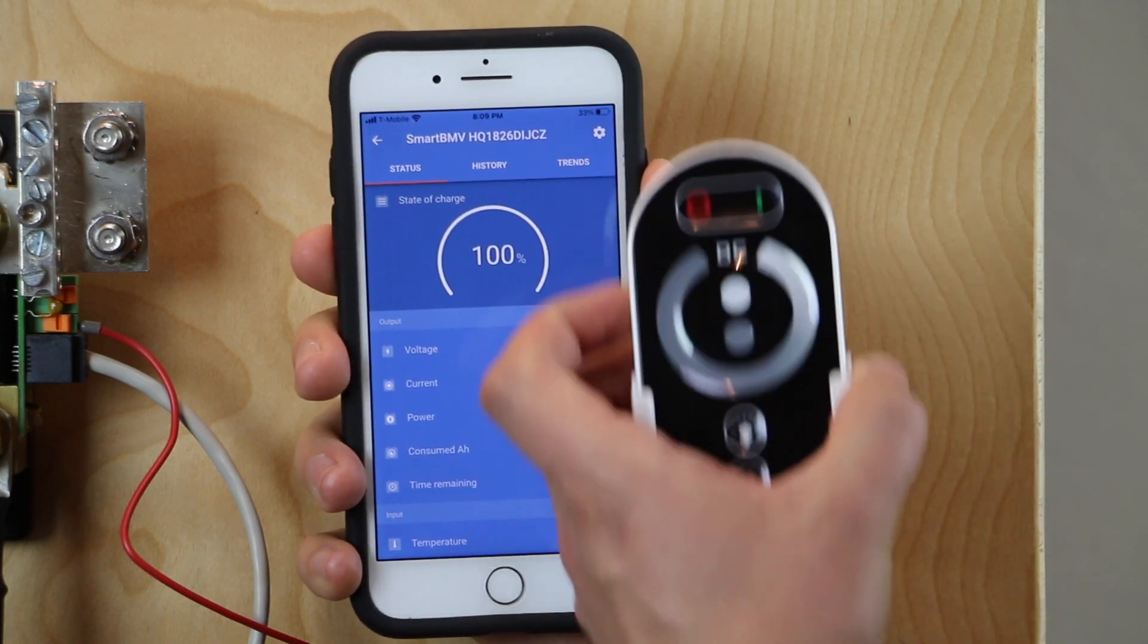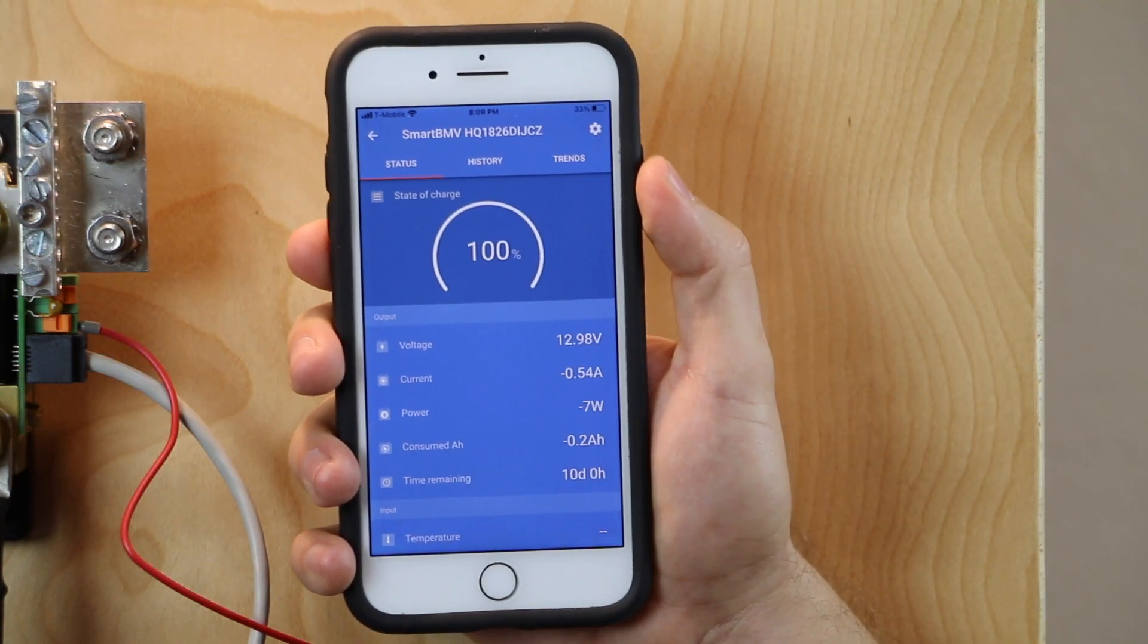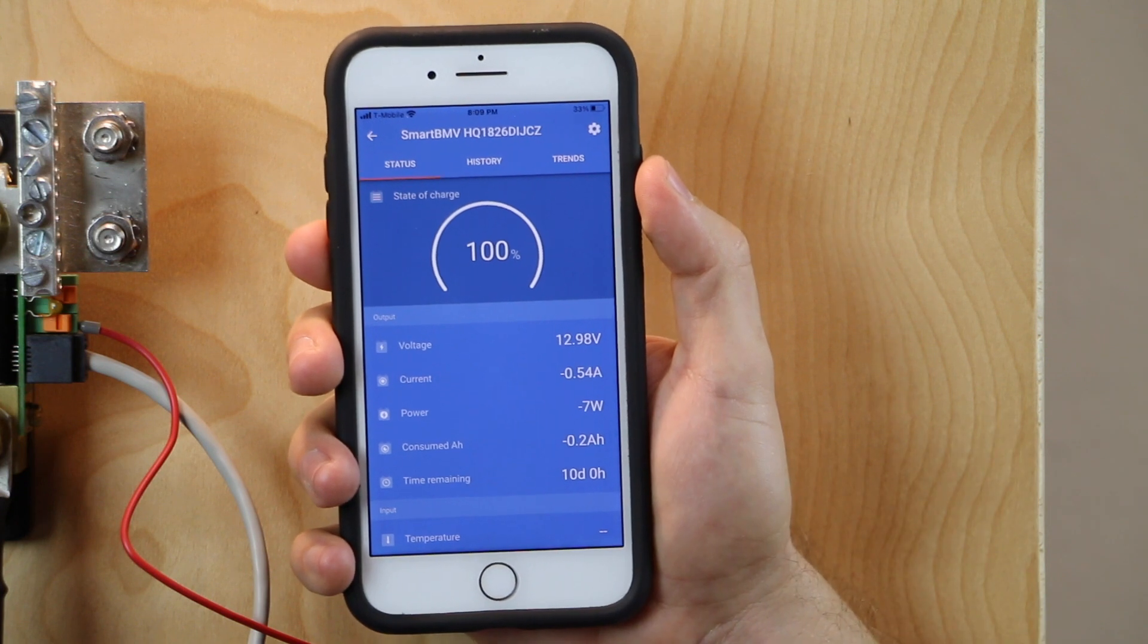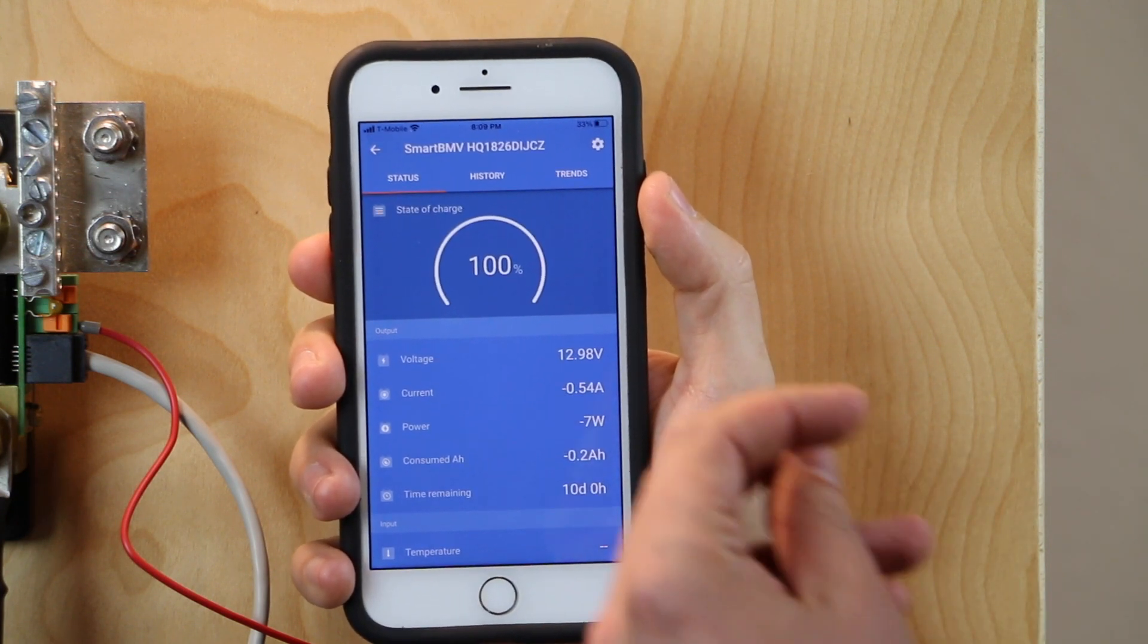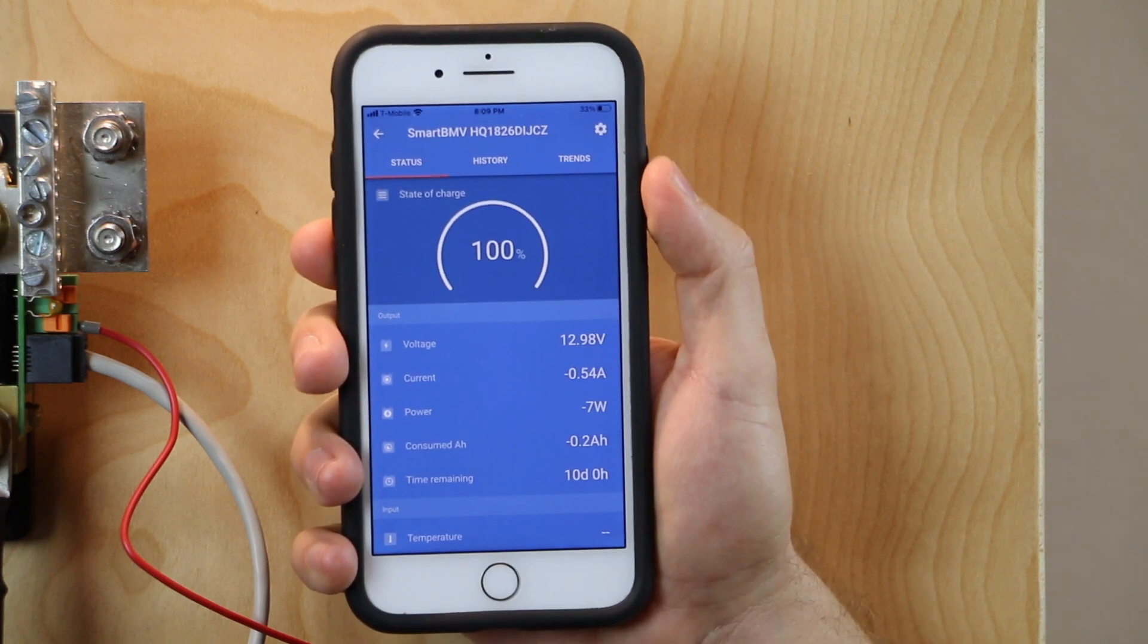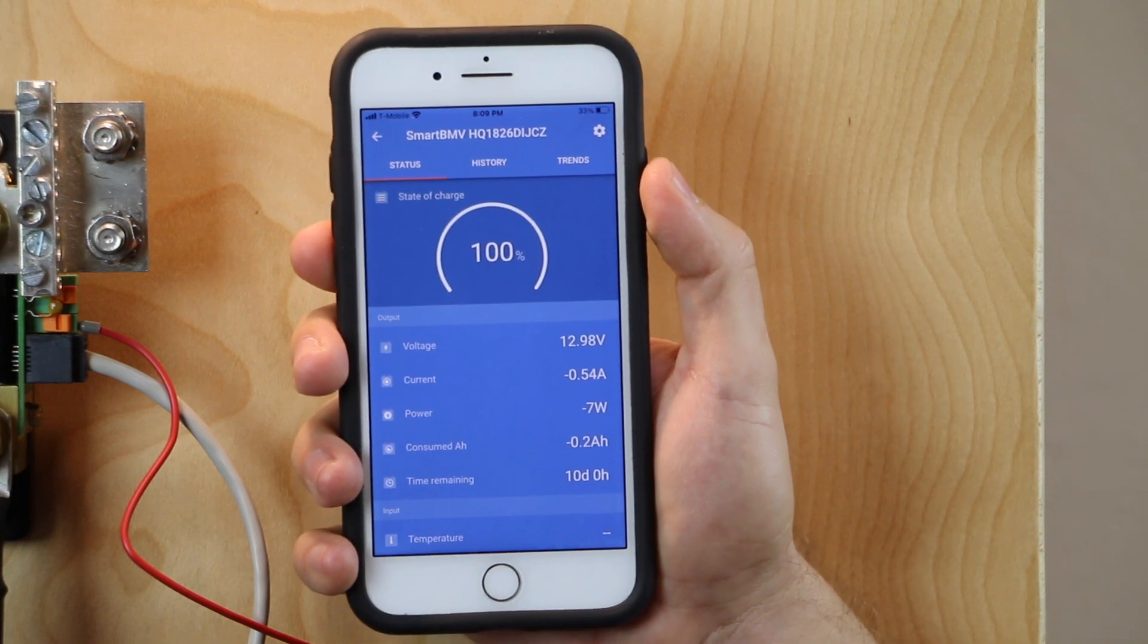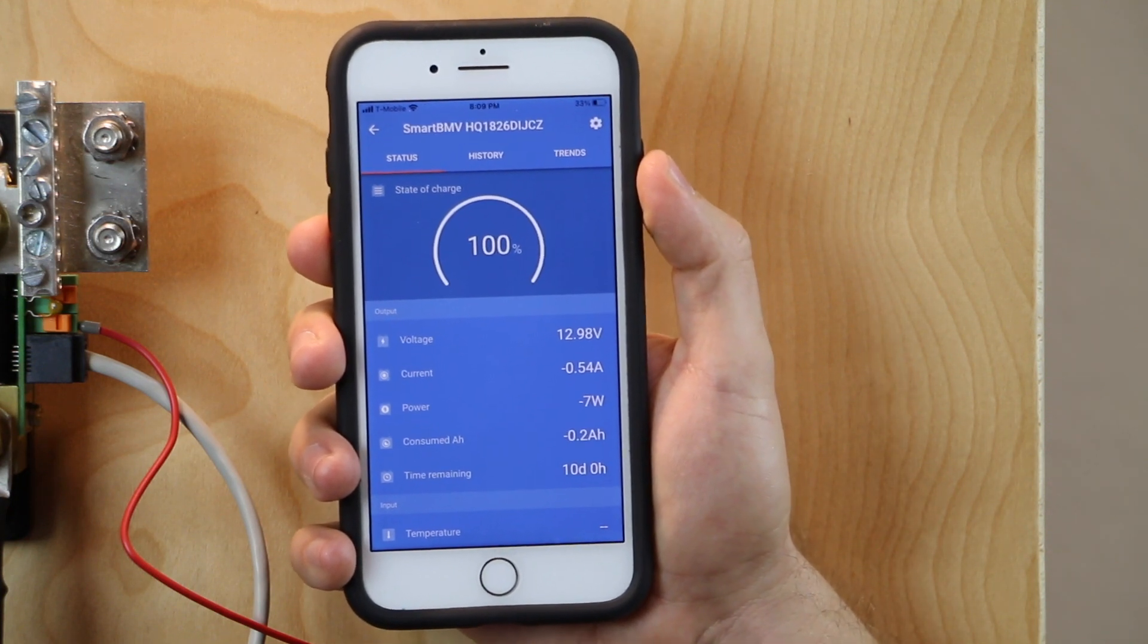What I'm going to do, I've got a little remote here for the dimmer. So let's turn that up and you can see we're now pulling 7 watts, 0.54 amps. So it's an immediate change as soon as you change the loads on the battery, whether it's power going in or out of the batteries, this is going to update instantaneously. So, pretty cool.